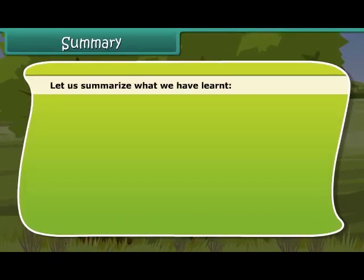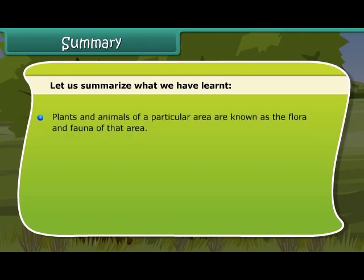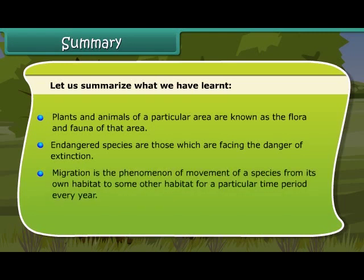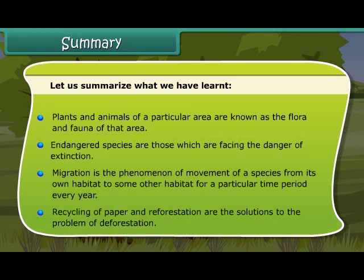Let us summarize what we have learned. Plants and animals of a particular area are known as the flora and fauna of that area. Endangered species are those which are facing the danger of extinction. Migration is the phenomenon of movement of a species from its own habitat to some other habitat for a particular time period every year. Recycling of paper and reforestation are the solutions to the problem of deforestation.